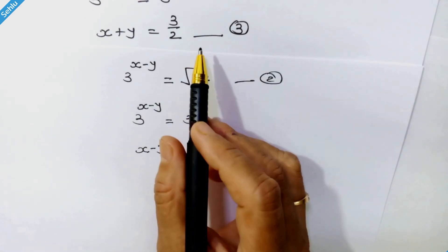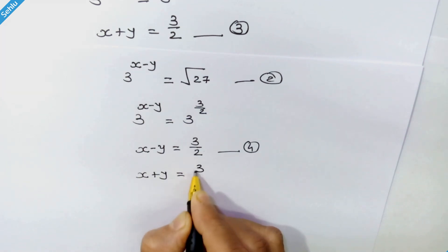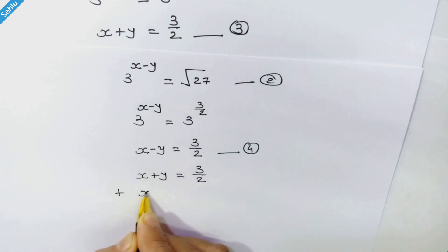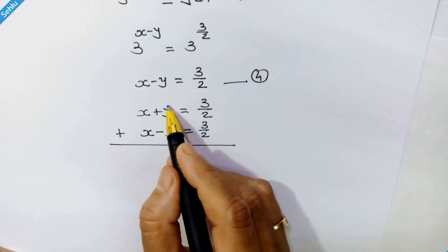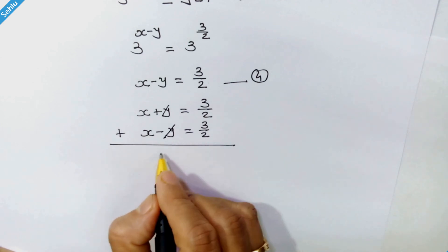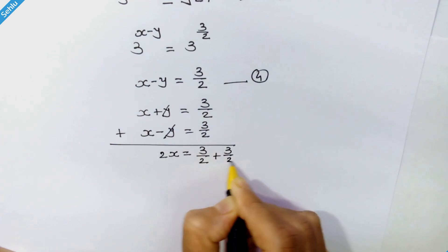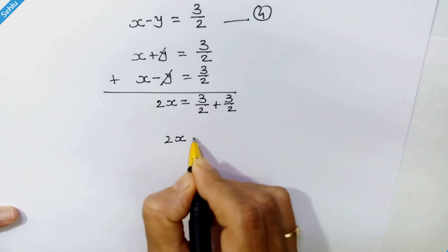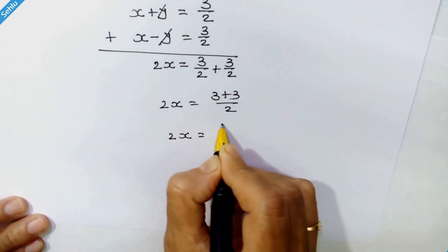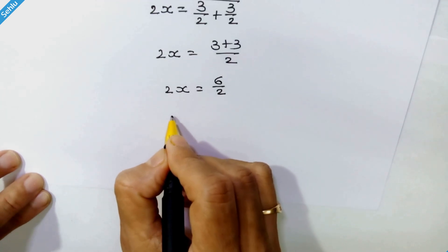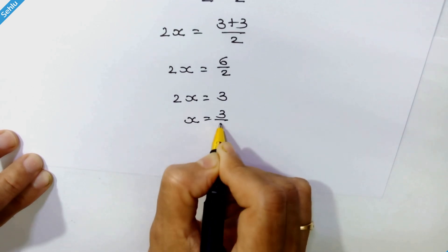Now we will add equation 3 and equation 4: x plus y equals 3 upon 2, plus x minus y equals 3 upon 2. Adding them, the y and minus y cancel out. We have 2x is equal to 3 upon 2 plus 3 upon 2, which gives 2x equal to 6 upon 2, so 2x is equal to 3. Therefore, x is equal to 3 upon 2.